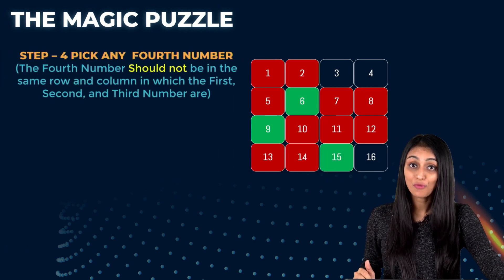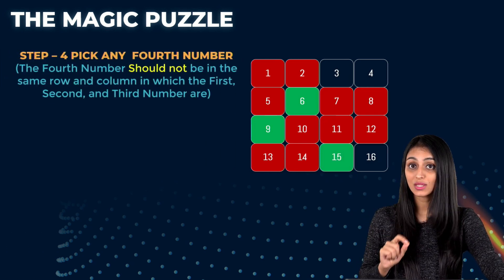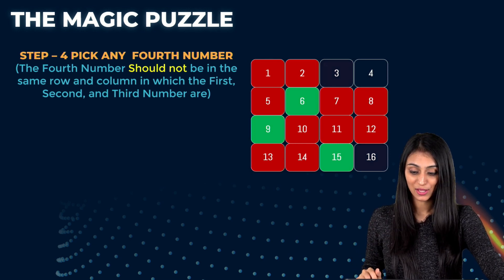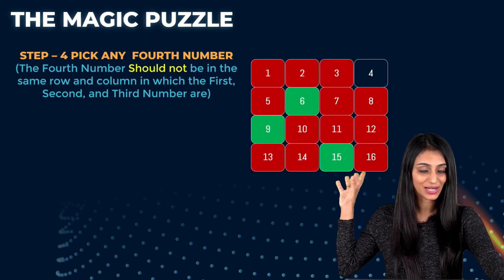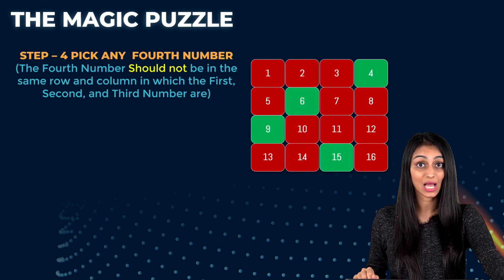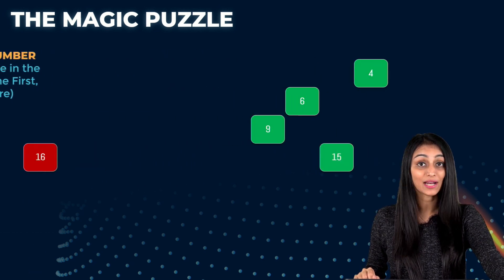Now we need to pick up the fourth number. Again fourth number should not be in the same row and column in which the first, second and third number are. So all these numbers are highlighted in red. Now I am only left with four. So that means the four numbers that I have chosen are 9, 6, 4 and 15.